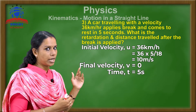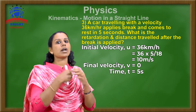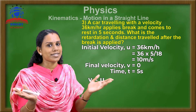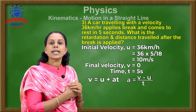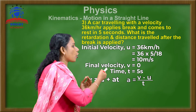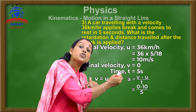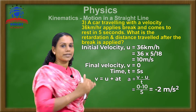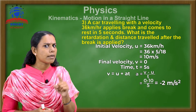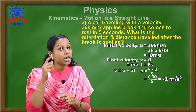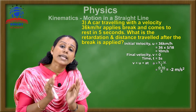We need to find the retardation. We have v, u, and t — so we use the first equation of motion: acceleration = (v − u) / t. Substituting: a = (0 − 10) / 5 = −10 / 5 = −2 meter per second square. The negative sign confirms retardation. Therefore retardation is 2 meter per second square.